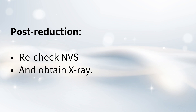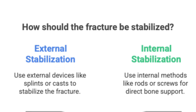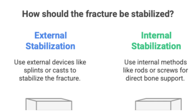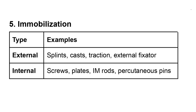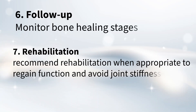After reduction, the next step is immobilization — stabilizing the fracture so it can heal. That can be done externally using splints, casts, traction, or external fixators, or internally using pins, screws, plates, and rods. Buck's skin traction is often used as a temporary measure, especially for lower limb fractures, to help improve the length, alignment, and rotation of the limb while waiting for more definitive treatment. And then there's follow-up to see how healing is going, and rehabilitation to get back to normal function and prevent stiffness. It's a whole process.